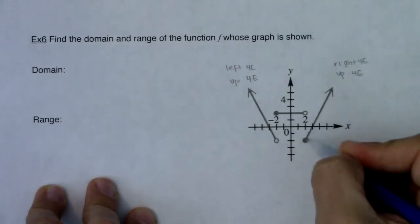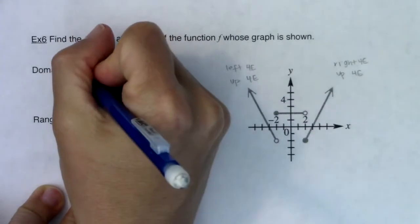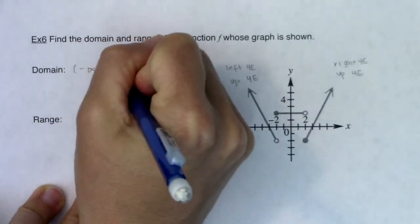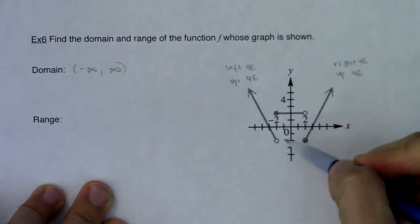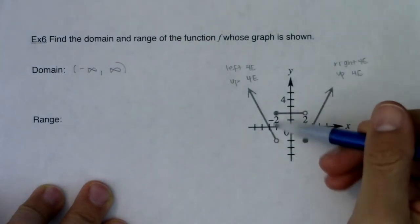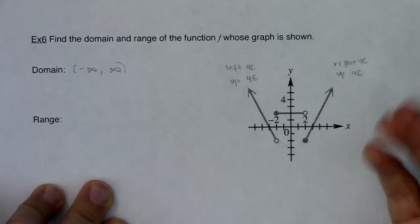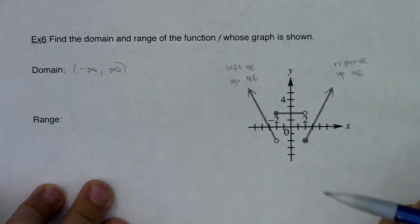So my pencil, as it moves left to right, doesn't have anything that it needs to leave out. My domain in this case is going to be all real numbers, which is different than example 5. If you remember in example 5, we had two open dots at x equaling negative 1, and that was why I needed to remove negative 1 from my domain back in example 5.